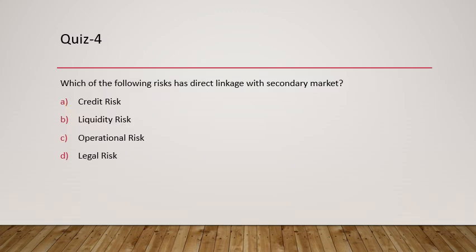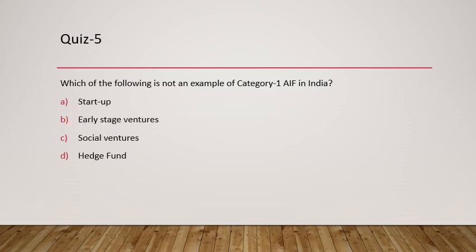Question 4: Which of the following risks has a direct linkage with the secondary market? For this risk to occur, there must be a secondary market and the instruments should be tradable — either at very high volume or potentially low volume. A direct linkage with the secondary market is liquidity risk, because it is in the secondary market that securities are traded, and if they don't have sufficient volume, liquidity risk is created.